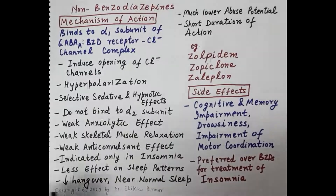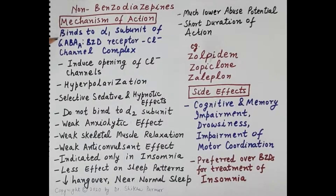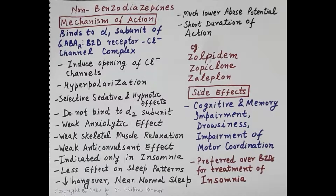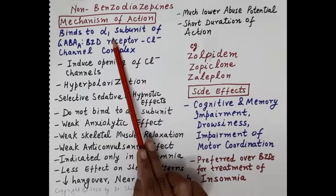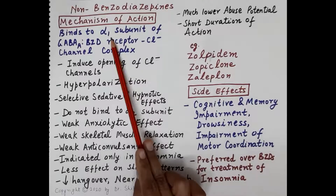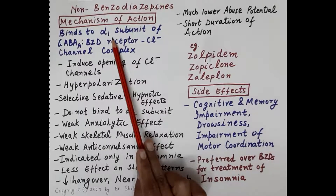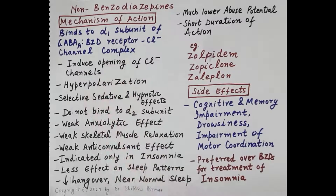Now we'll talk about the pharmacology of the third category: non-benzodiazepines. Non-benzodiazepines bind to the alpha-1 subunit of the GABA-A benzodiazepine receptor chloride channel complex. An important feature is that non-benzodiazepines exhibit higher selectivity for the alpha-1 subunit, and therefore exhibit selective sedative and hypnotic effects. Their anxiolytic effect is very weak.